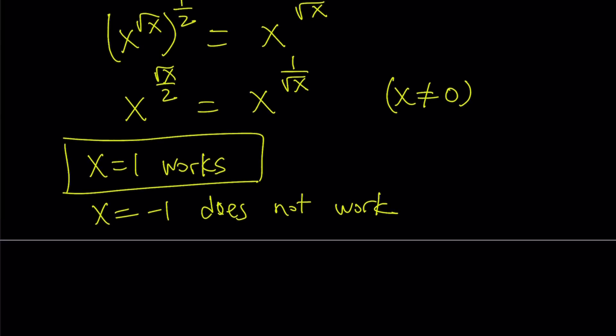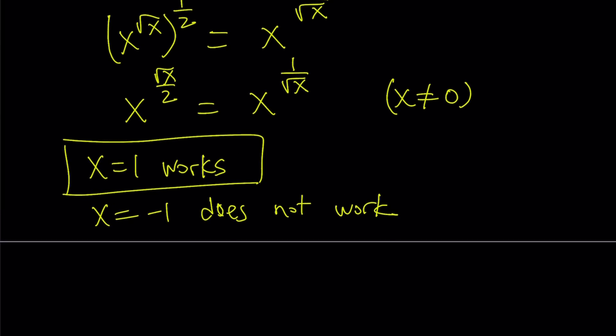And now we can proceed with the usual stuff. Since two exponentials equal each other, we already checked the bases, and they're equal. So exponents are going to be equal. We get square root of x over 2 equals 1 over square root of x. Cross multiplication gives us x equals 2. And that's actually a valid solution. So x equals 2 is another solution.